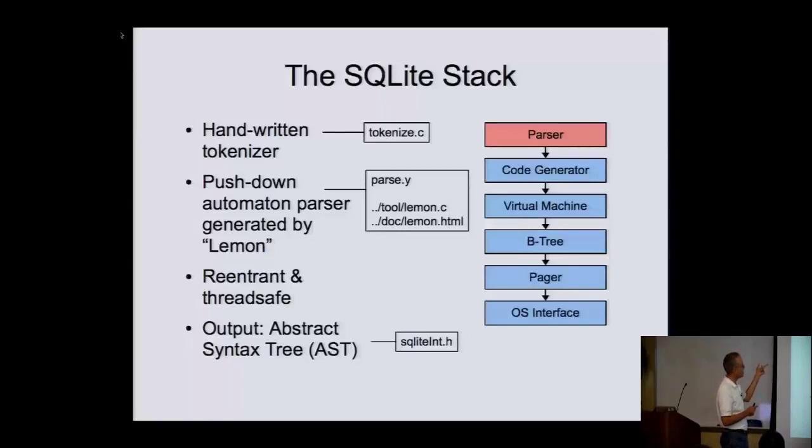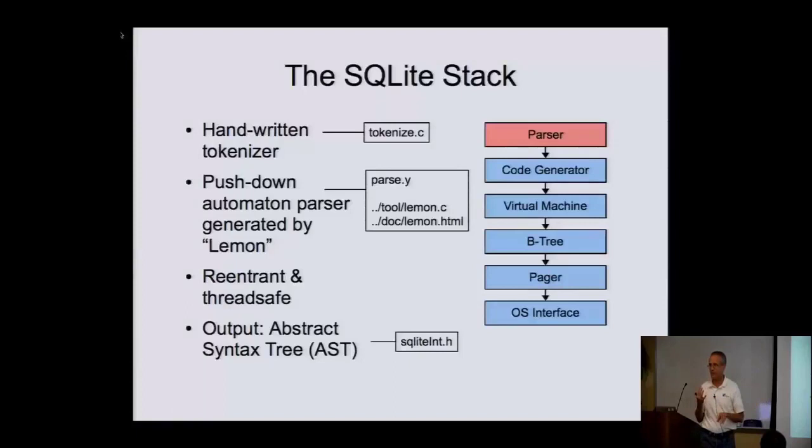The parser is a traditional LALR(1) parser. It doesn't use YACC — I wrote my own parser generator called Lemon when I was a graduate student. It has the advantage over YACC that it generates a parser that is re-entrant and thread-safe. Back when I was doing this, Bison and YACC parsers were neither of these things — they may have fixed that now, but it's a traditional parser.